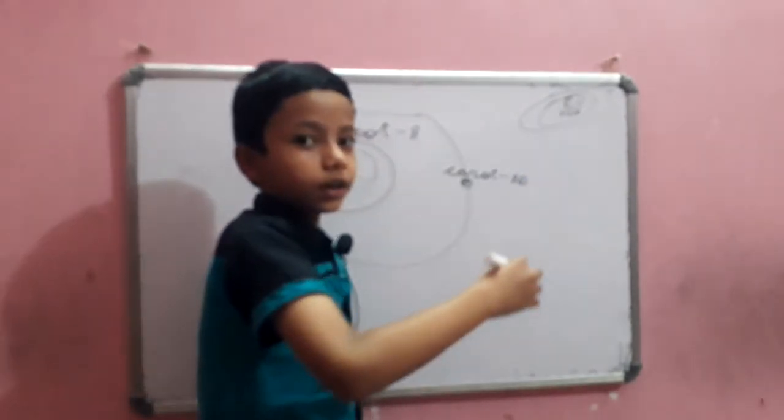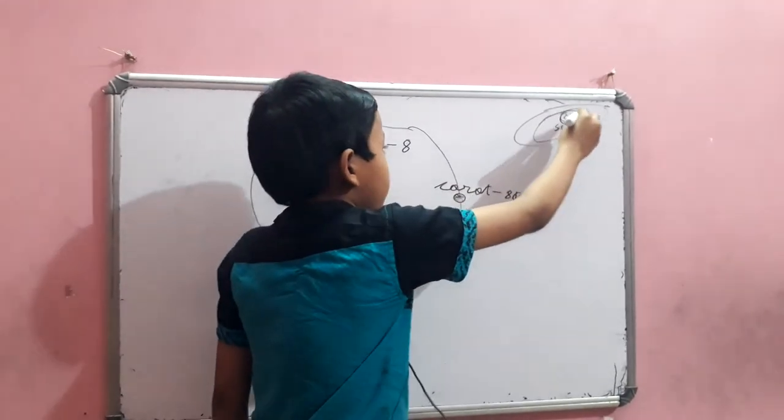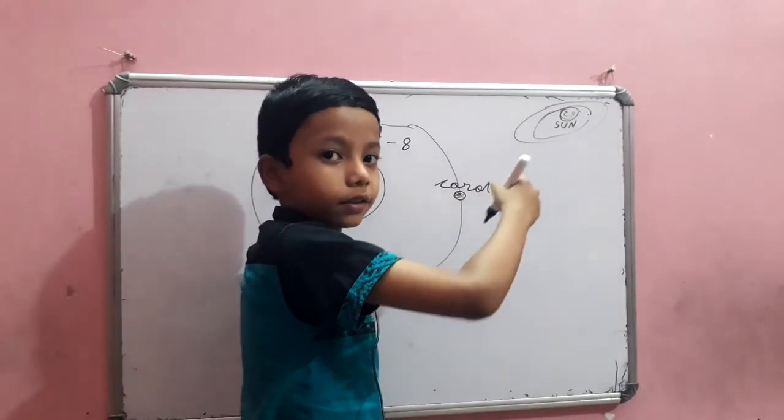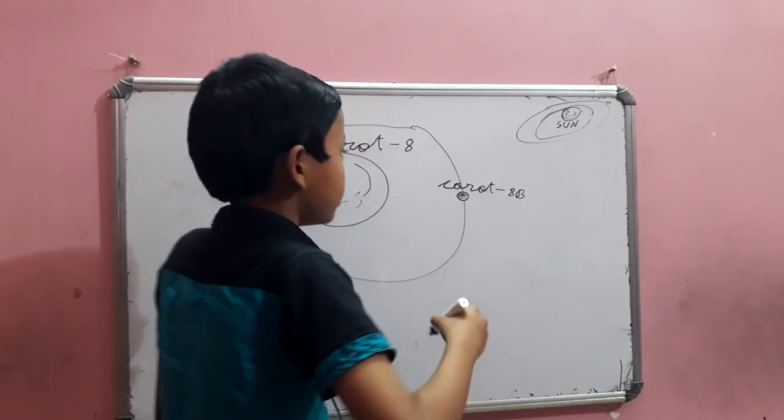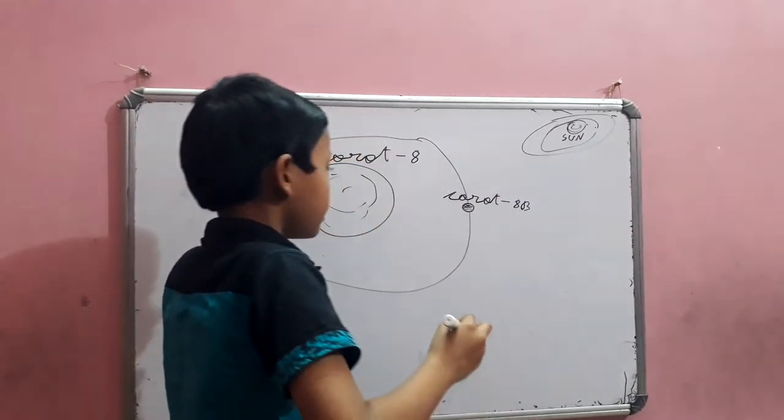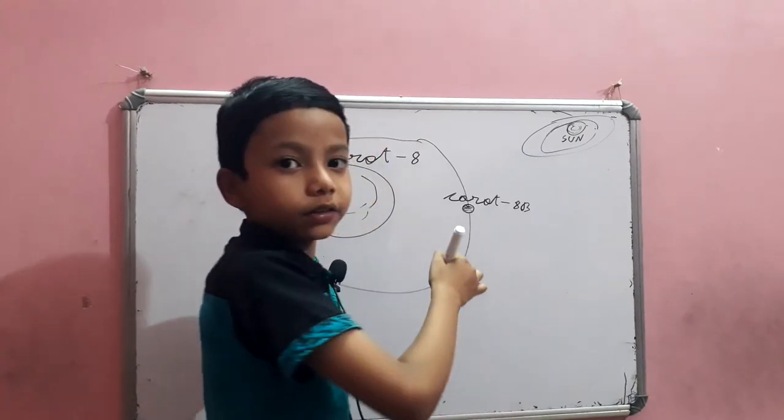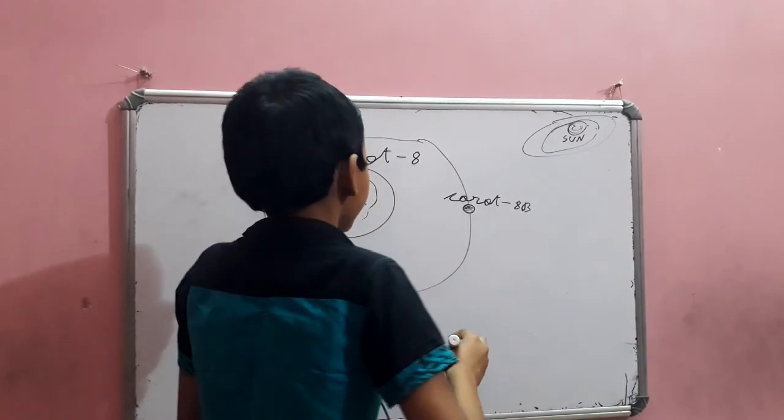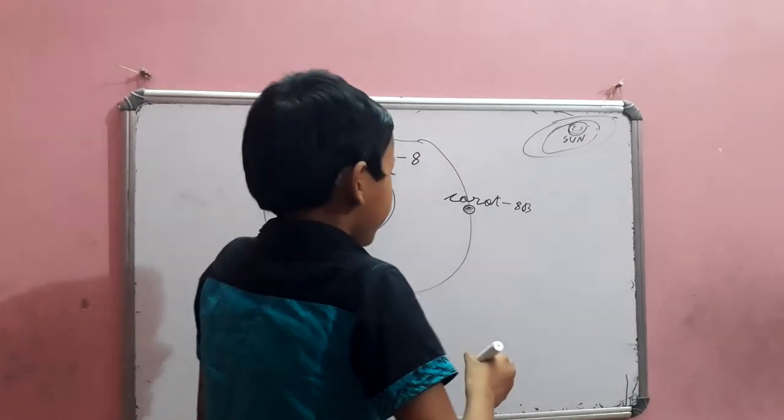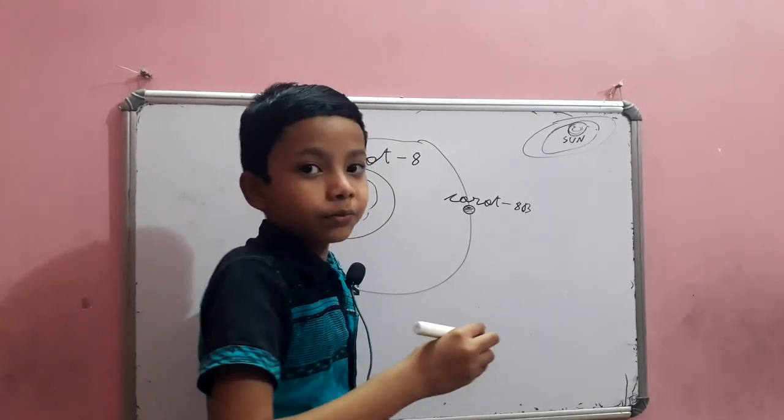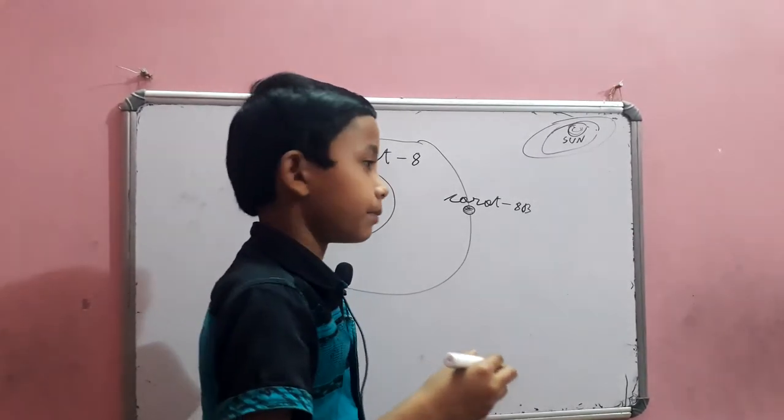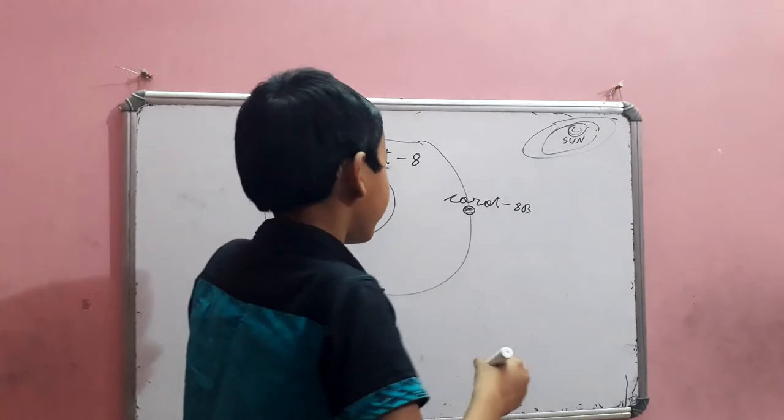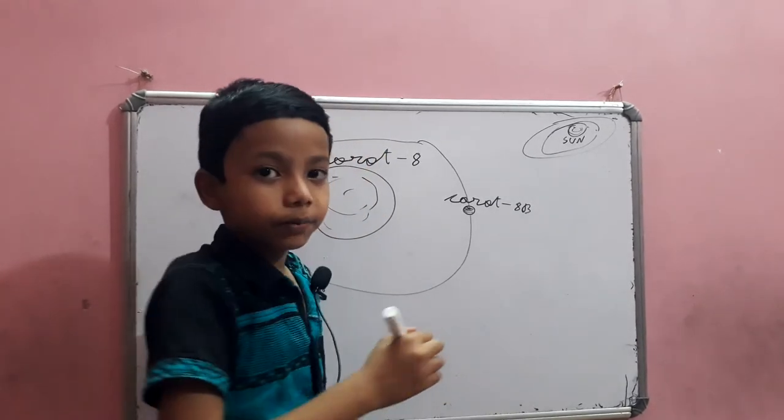Now, this system has eight planets, and this only has just one. That's sad. And Corot-8 B doesn't have a moon. But if it has a moon, then what will we name it? We don't know it, because Corot-8 B doesn't have a moon.